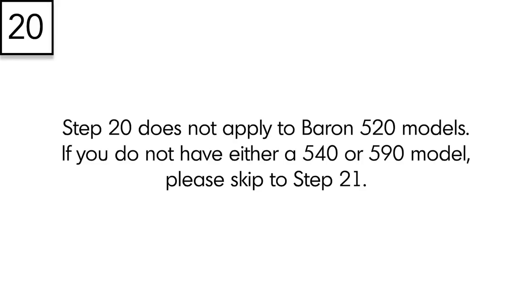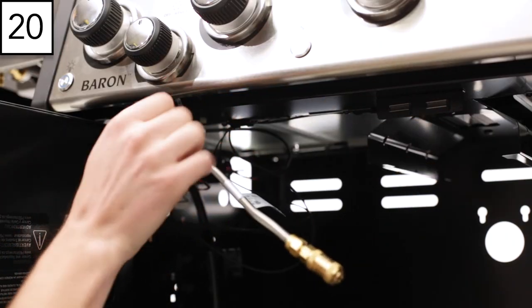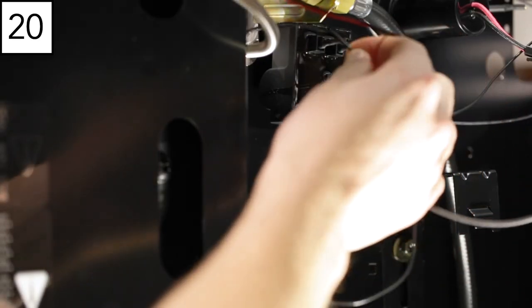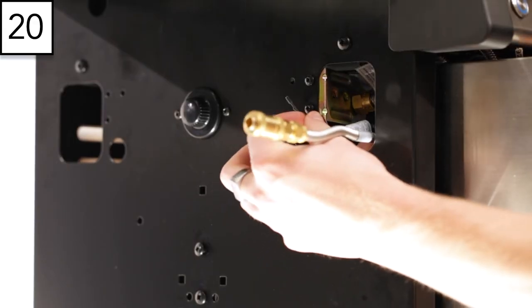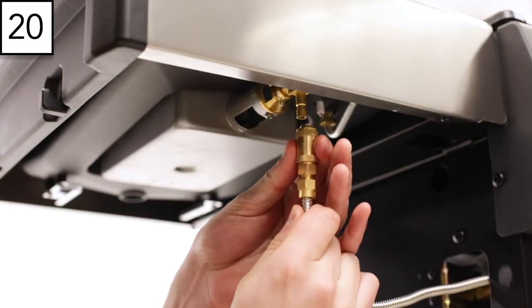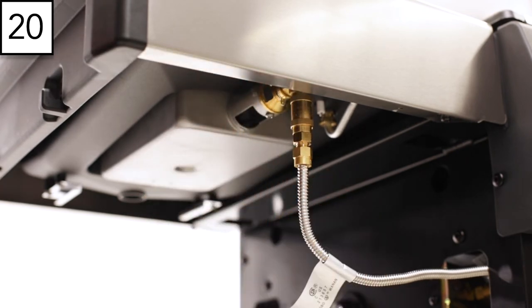Step 20. The installation of the side burner hose is only applicable to the Baron 440 and higher. The Baron 420 does not feature a side burner. For a grill with an infrared side burner, install the side burner hose by routing the hose through the side panel along with the igniter wire. Pull down on the collar as you push the hose into place. Release the collar and gently pull on the hose to confirm a secure connection.